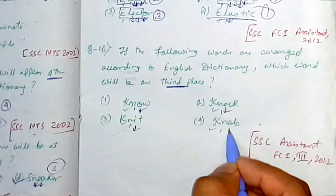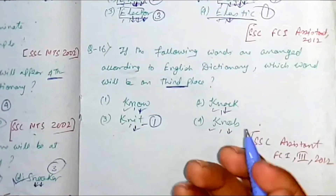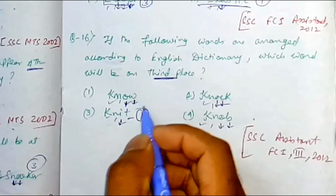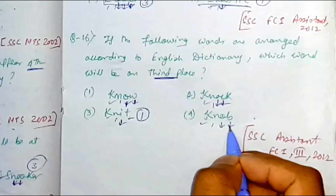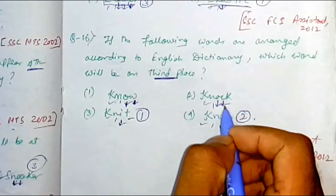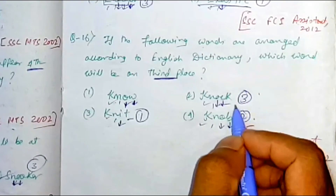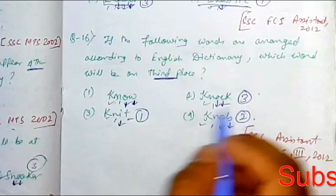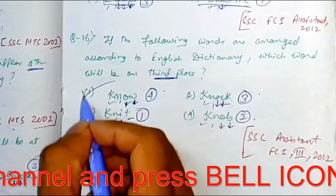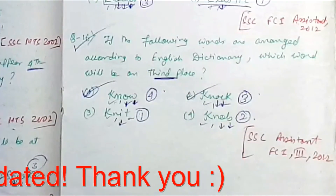Here is the solution. The words are no, not, knit, and nulls. The first letters are the same, and the second letters are also the same. At the third letter there is a difference: knit has I, which comes before O in the other words. So knit is first. Among no, not, and nulls — comparing further — knock comes before no and not. So the order places no at third place. Option 2, no, is the answer for question 16.